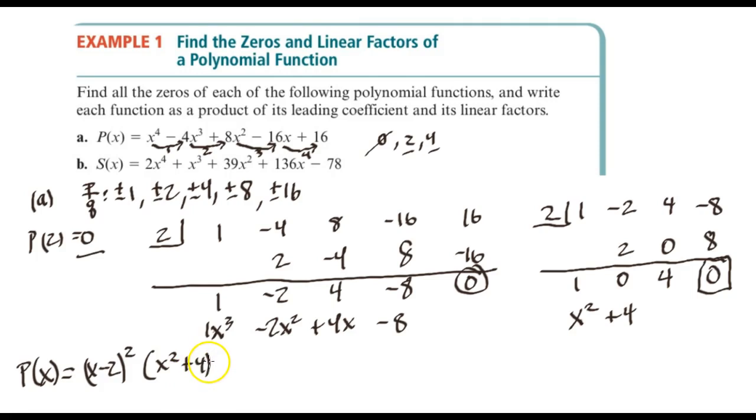And then now we want to factor this further, and we'll notice that when we factor this further that we're going to end up with some imaginary terms here. So look at this. We'll factor x squared plus 4. And if we set this equal to zero, then we can solve for x.